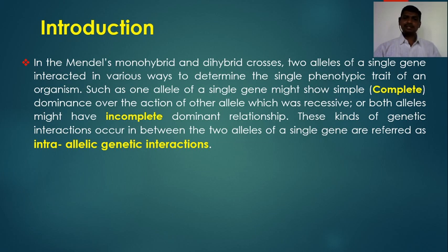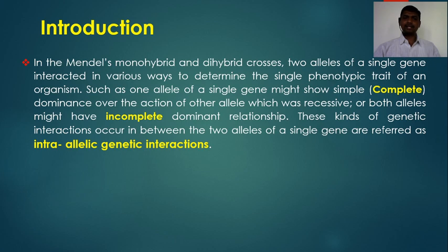In incomplete dominance, the dominant allele is not able to completely mask the phenotypic expression of the recessive allele. As a result, an intermediate phenotype appears in the F1 generation. For example, a cross between red-flowered and white-flowered plants gives pink-flowered plants in F1 — because of the incomplete dominance of the dominant allele, producing an intermediate phenotype.